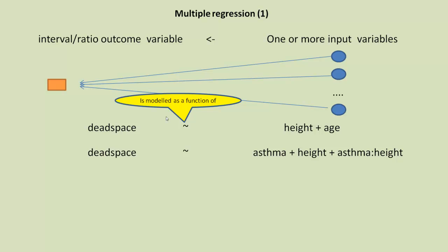Similarly, we could say dead space is modeled as a function of asthma plus height plus asthma interaction height. That colon means asthma interaction height. Similarly, we could say dead space is a function of asthma plus bronchitis. So we could use various models to try and predict the dead space.